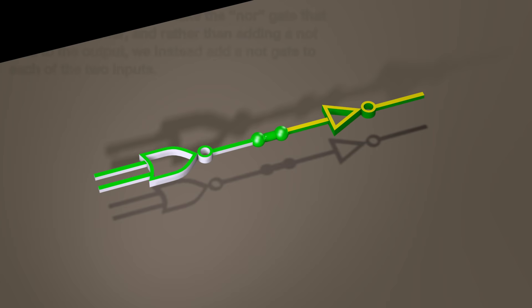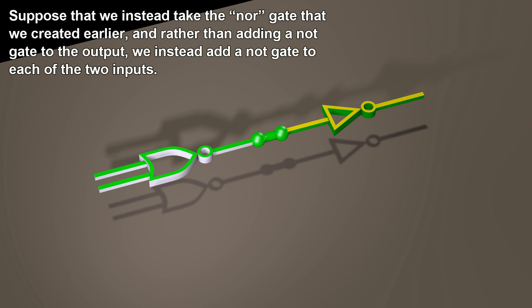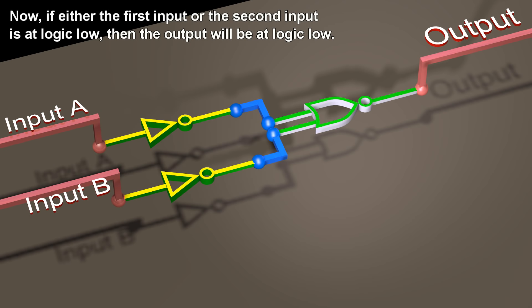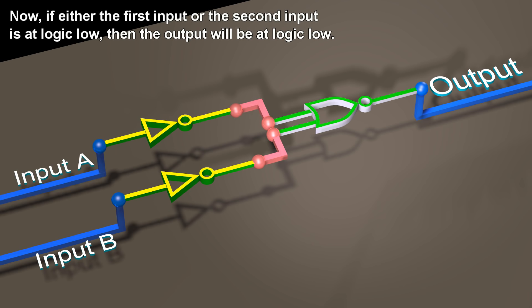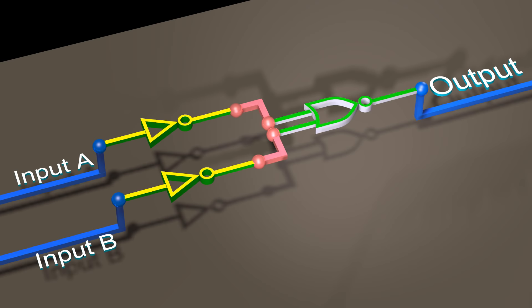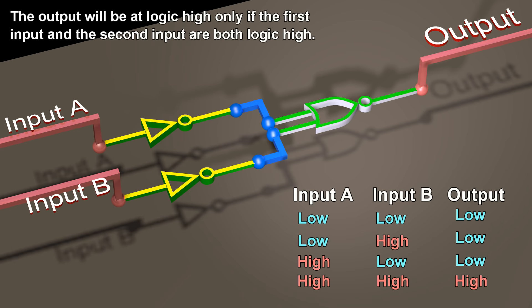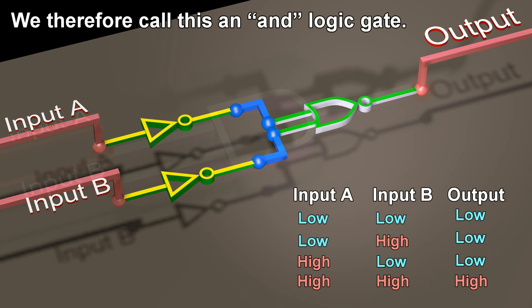If we take the NOR gate we created earlier, and rather than adding a NOT gate to the output, we instead add a NOT gate to each of the two inputs, then if either the first input or the second input is at logic low, the output will be at logic low. The output will be at logic high only if the first input and the second input are both logic high. We therefore call this an AND logic gate.